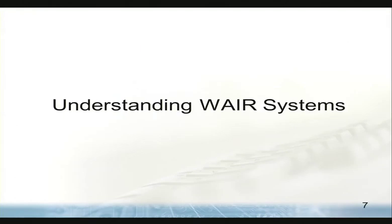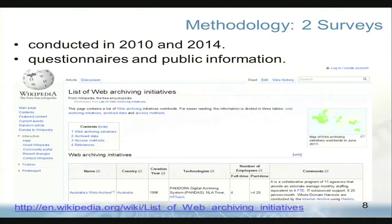To understand the web archive information retrieval systems, my methodology was to conduct two surveys, one in 2010 and the other in 2014. We did questionnaires and sent them to the web archiving community through email, to people responsible for these initiatives in forums. We also gathered public information related to these projects and created a Wikipedia page. Since then, many people in this area have updated this Wikipedia page, making it a very good resource with currently updated information. We used this in the second survey as well to find many interesting findings.